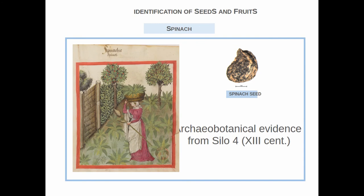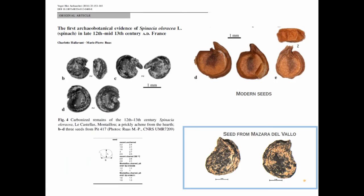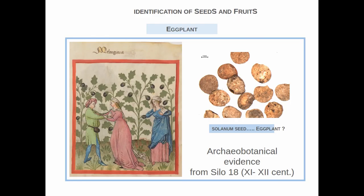We find also spinach — probably the second attestation of spinach that we have found. It is difficult to find because these are seeds that we can encounter in mineralized status. We also find, probably, Solanum melongena. Also in this case, it is difficult to arrive at species determination. We can arrive to the genus, but it is really difficult when working with mineralized seeds to reach species-level identification. With additional evidence today, we have different attestations of aubergine.